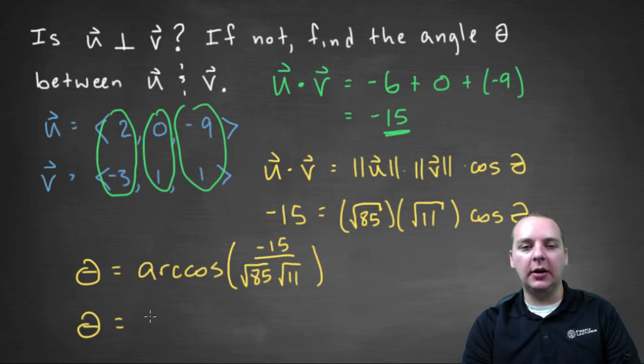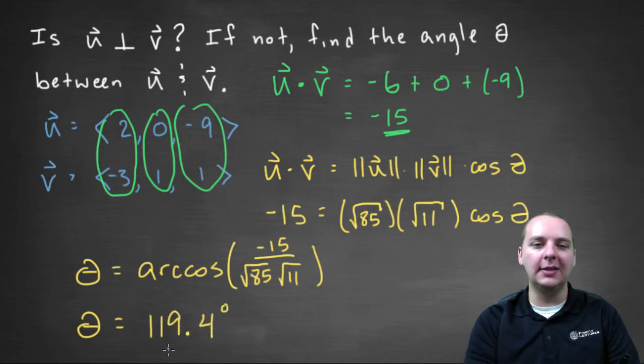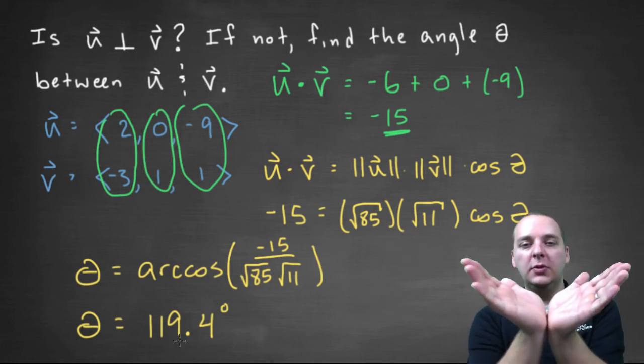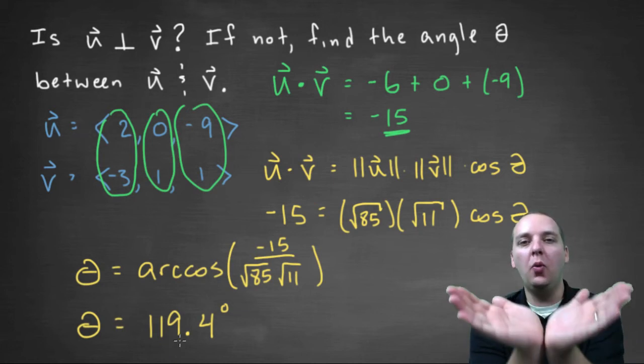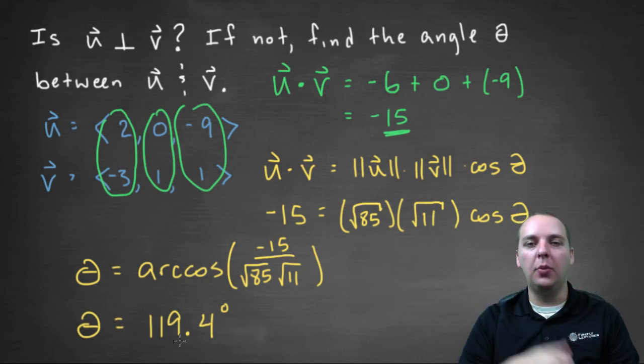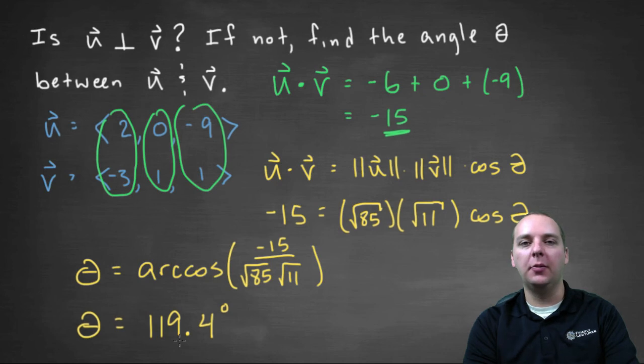And I got a hundred and nineteen point four degrees. So hopefully you got the same thing. Which means these two vectors here are pretty spread apart, they're way more than ninety degrees. They're a hundred and nineteen point four degrees apart from each other. I'll see you soon.